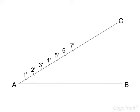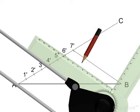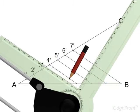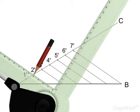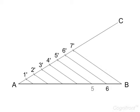6 dash and 7 dash. Join point 7 dash with point B of the line AB and draw lines parallel to 7 dash B cutting the line AB at 6, 5, 4, 3, 2 and 1 respectively. Now observe the line AB has been divided into 7 equal parts.